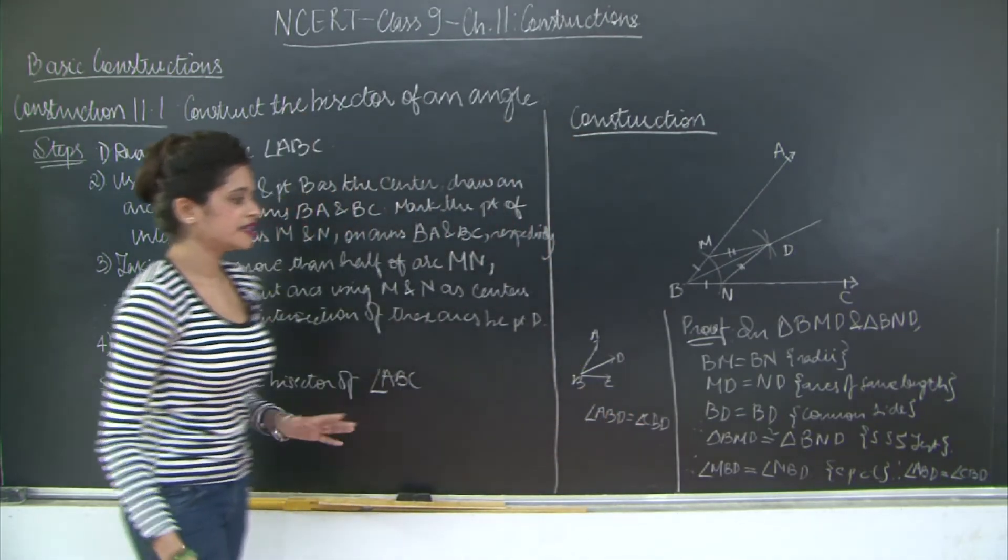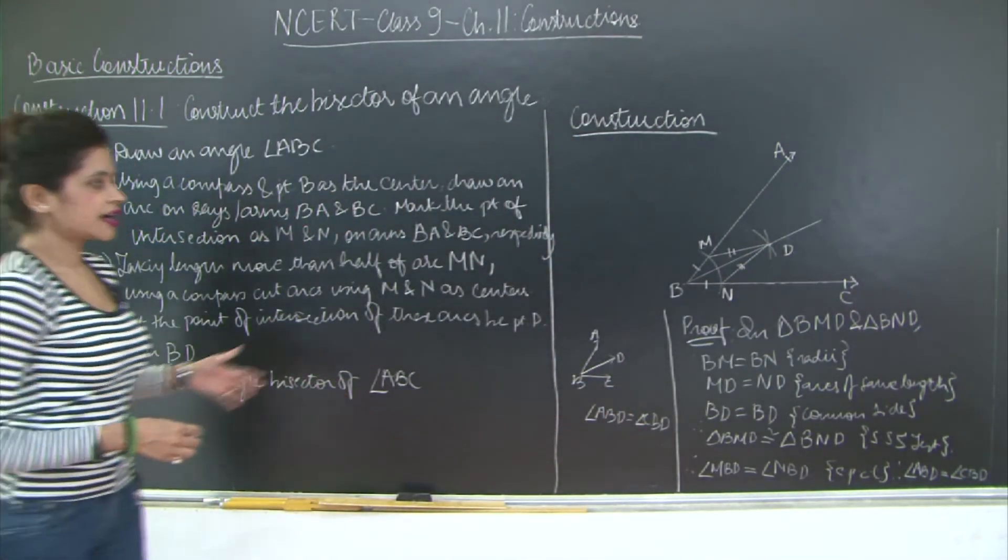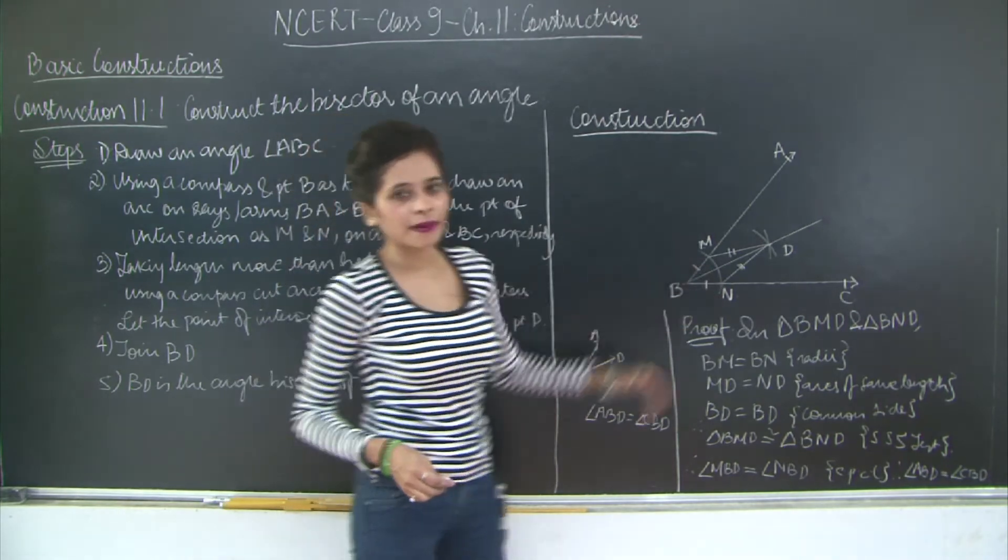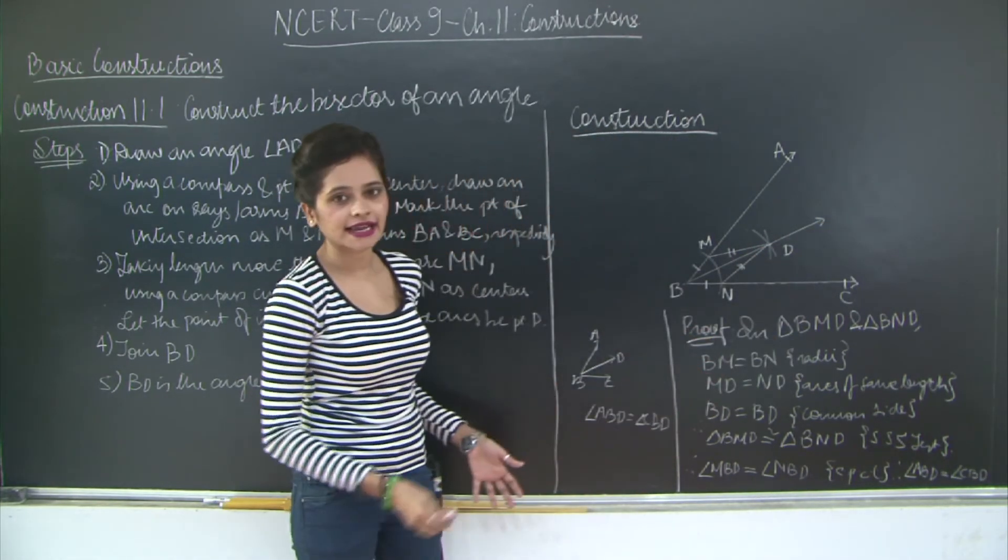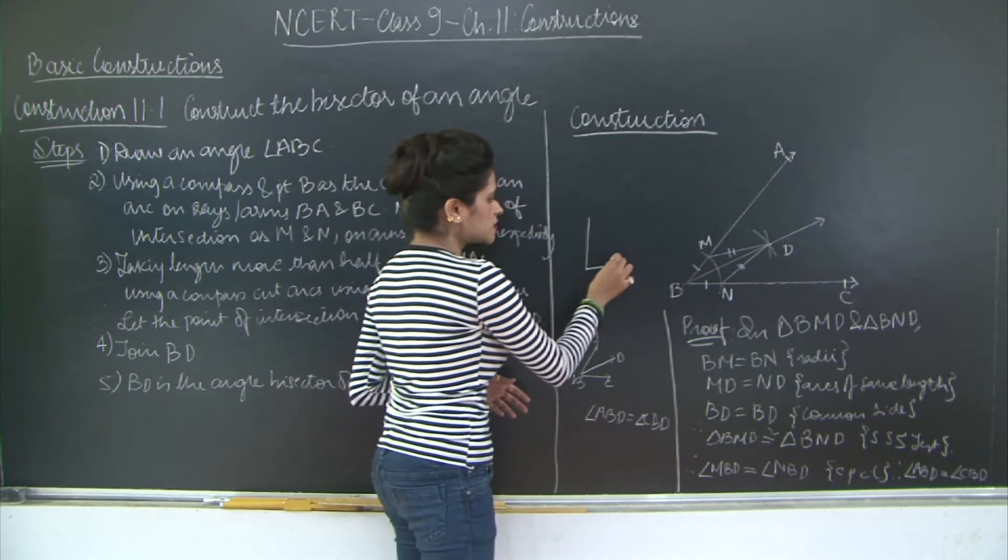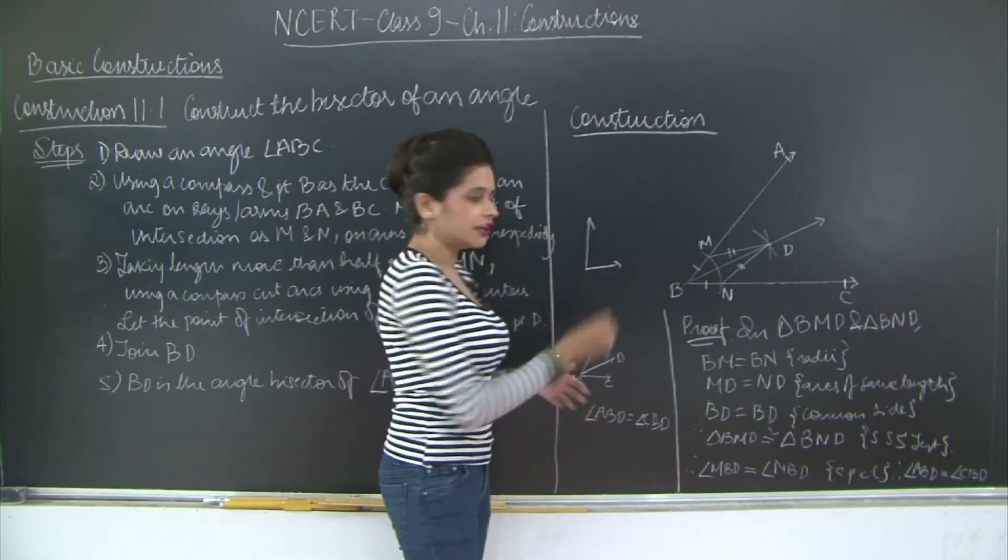So this was your basic construction for drawing the angle bisector of your angle. So even if you had a right angle triangle. Right angle. If this was your right angle.